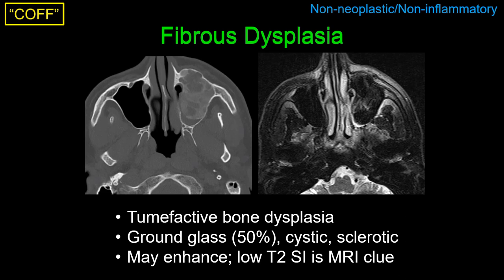Fibrous dysplasia occurs throughout the body and does favor the craniofacial region. We tend to be most familiar with the ground glass appearance on CT, but remember this only occurs in about 50% of cases — other times these lesions may be cystic, sclerotic, or a combination. The MR features can be confusing because despite being a bone dysplasia and not a neoplasm, these can appear very mass-like and can enhance. A clue on MR is very dark T2 signal — anything with the word fibrous or fibroosseous will typically give you very low T2 signal, in contradistinction to anything chondroid, which typically gives very bright T2 signal.